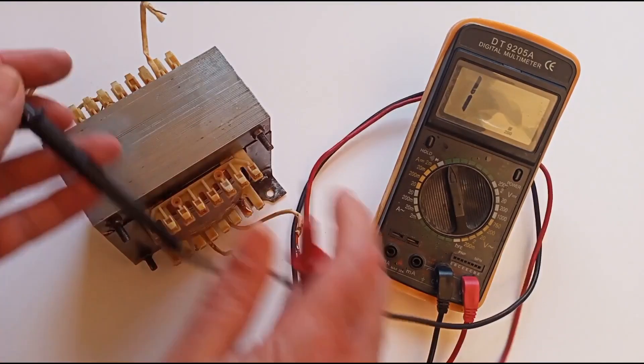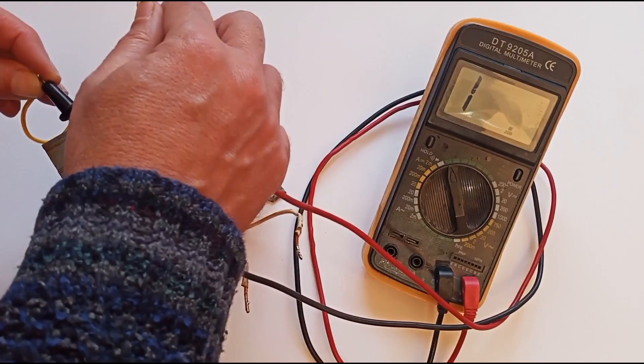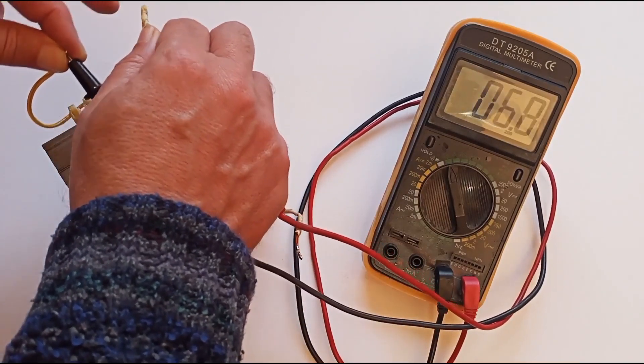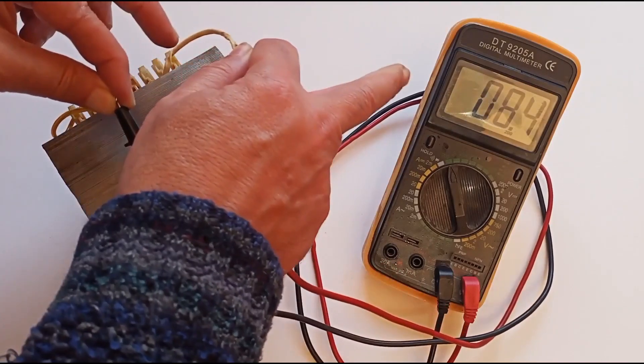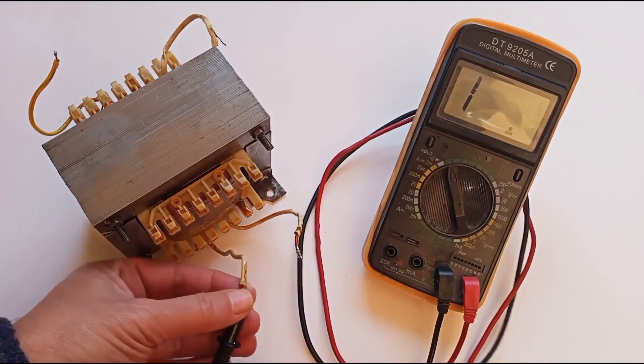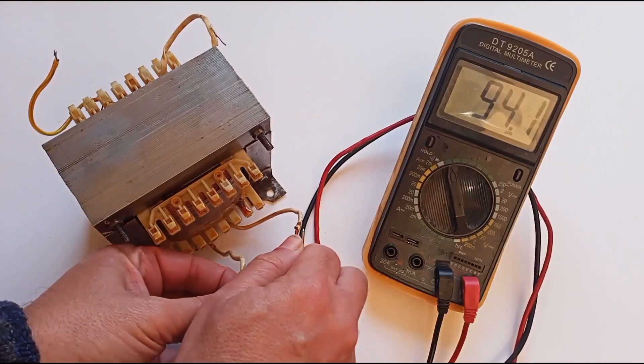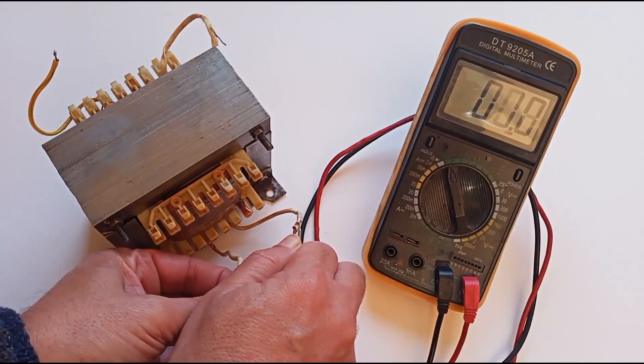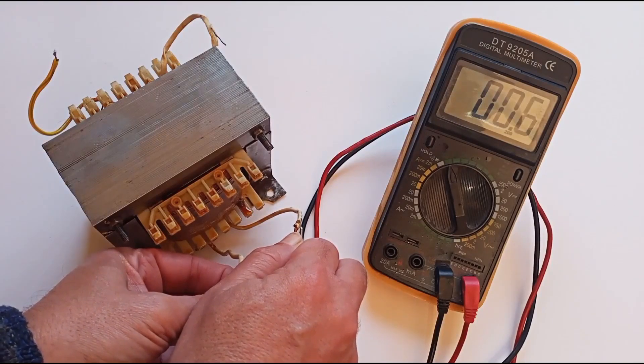Using an ohmmeter, we measure the primary winding, usually made of thinner wires, and find its impedance to be about six ohms. The secondary winding, characterized by thicker wires, has a much lower impedance, less than one ohm, which is difficult to measure with a regular multimeter.